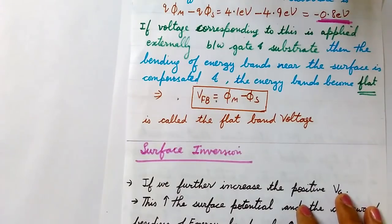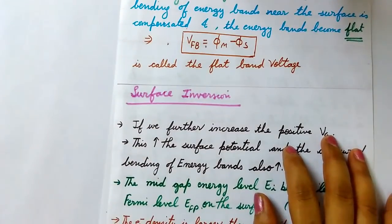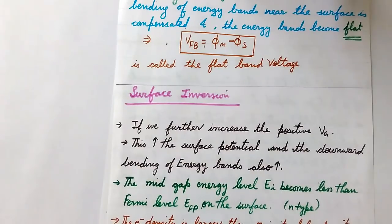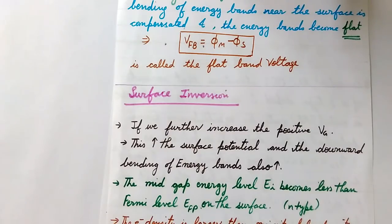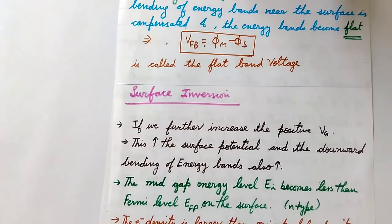Now moving to the third operating region of the MOS system: surface inversion. Recall that under negative gate voltage we had accumulation of holes at the surface. Under a small positive gate voltage, a depletion layer formed as the positive potential pushed holes away from the surface, creating a region devoid of free charge carriers. We haven't yet calculated the depth of the depletion layer — that will be covered in the next video.